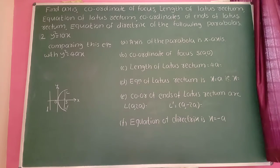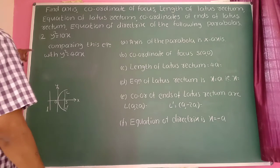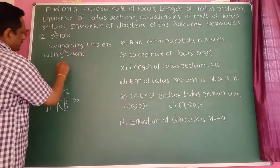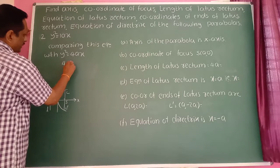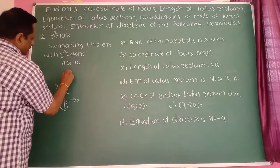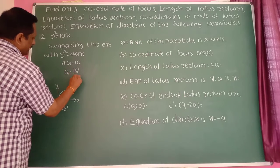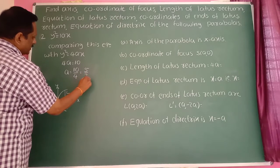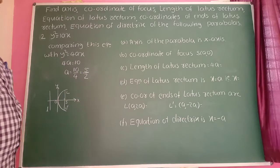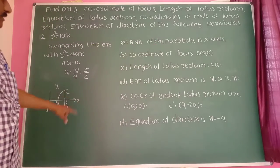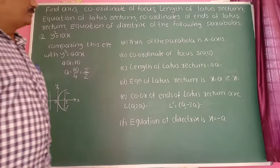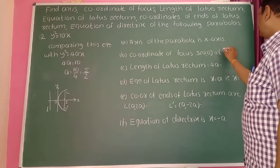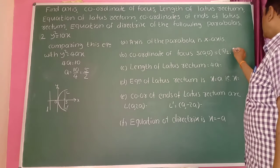Second equation: y² = 10x. Comparing with the standard equation y² = 4ay, we get 4a = 10, therefore a = 10/4 = 5/2. The axis of the parabola is the x-axis. The coordinates of the focus are (a, 0) = (5/2, 0).